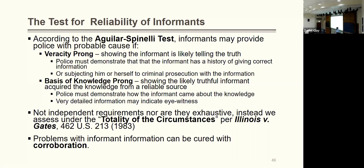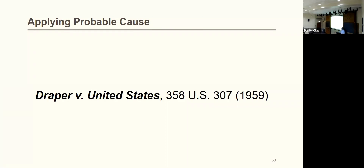If there are problems with the veracity prong or basis of knowledge prong, and we need probable cause for a warrant, we can cure bad information or a bad history through corroboration. Corroboration means police go out and observe what the informant said — they see the suspect wearing what was described, they verify what was reported. So a problem with an informant doesn't kill probable cause; it just means police need to take an extra step to cure it.